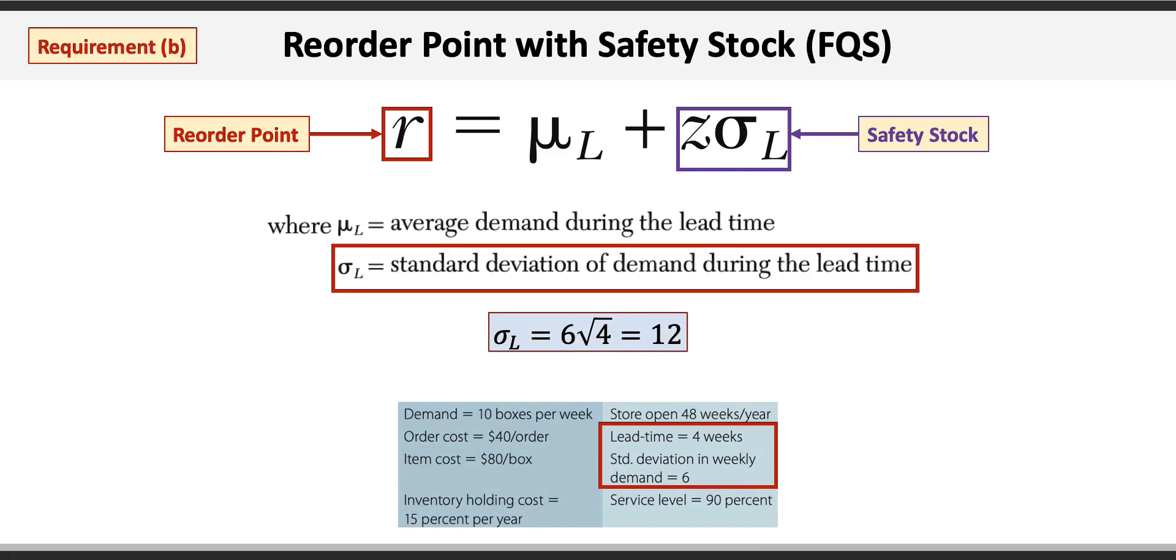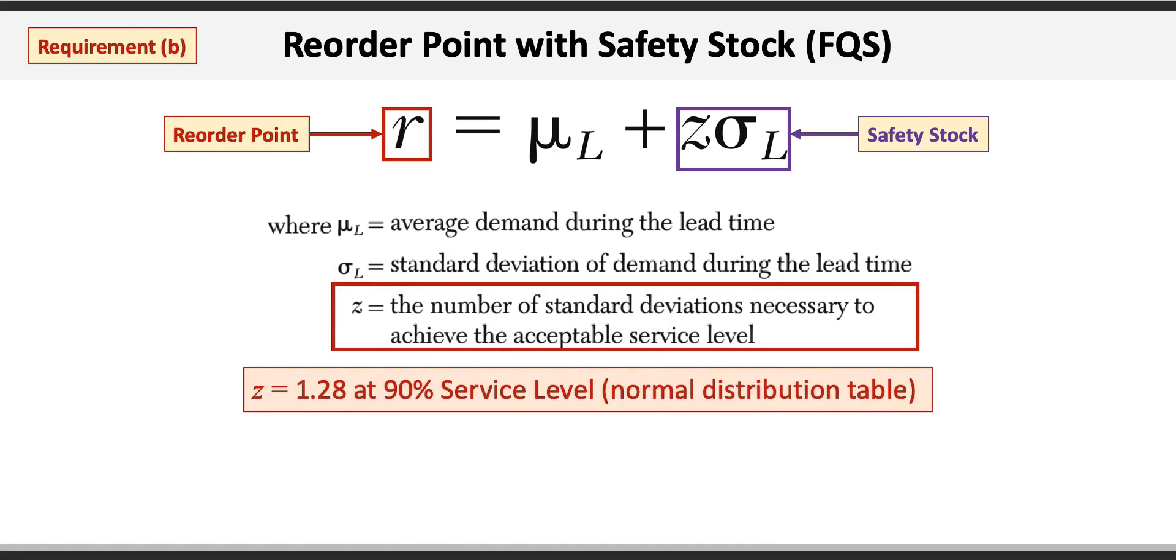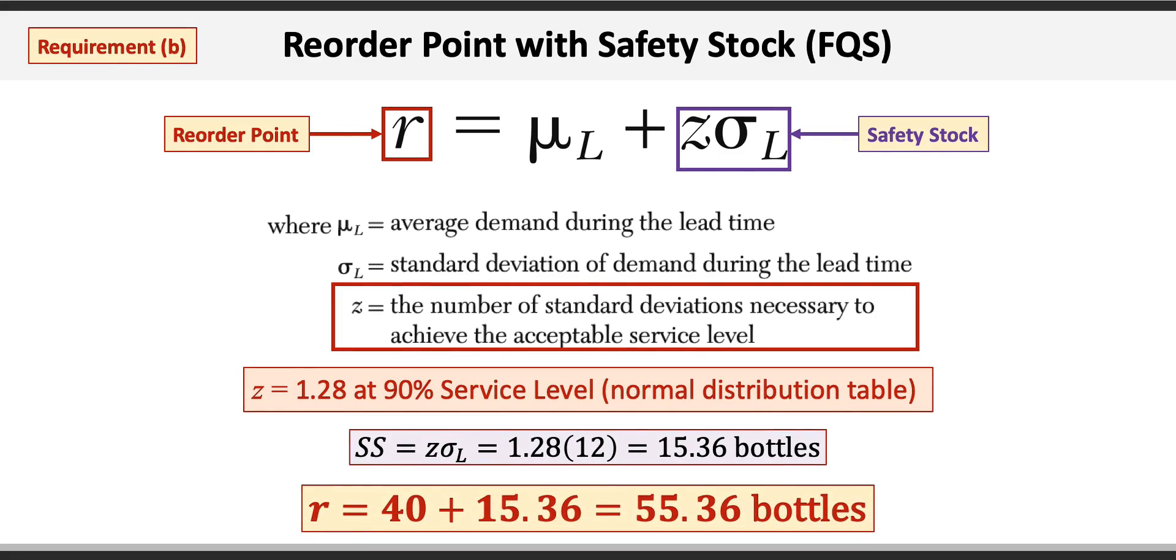Z is the number of standard deviations necessary to achieve the acceptable service level, and we need to go to the standard normal table for this. At 90%, the Z value is 1.28. Now we can calculate the safety stock, which is Z times sigma_L, or 1.28 times 12, which equals 15.36 bottles.